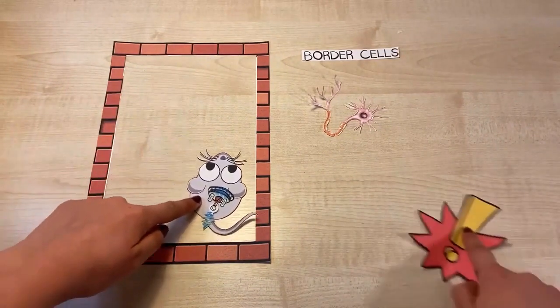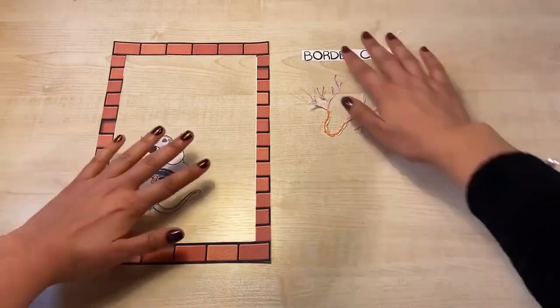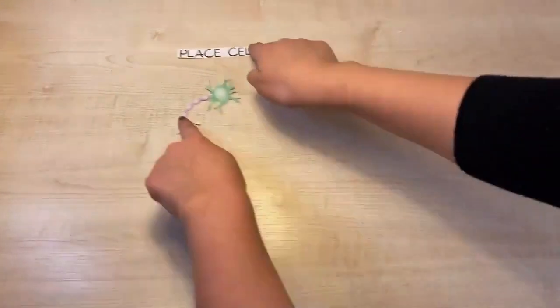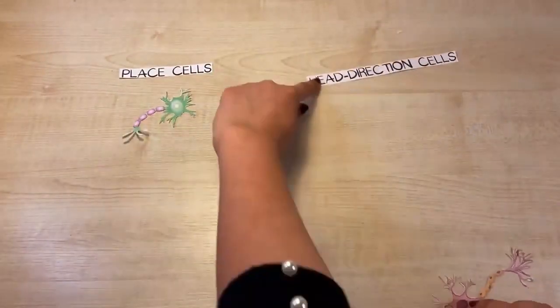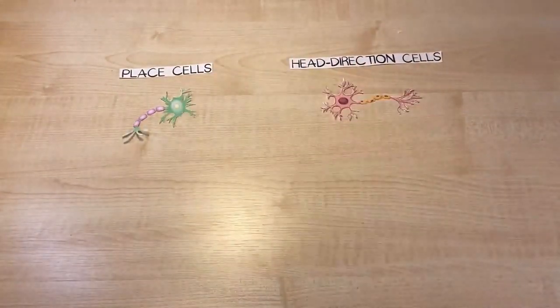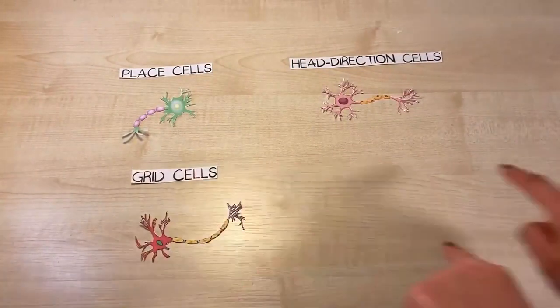These neurons work together, communicate with each other, and create patterns of activity that are repeated later so the brain can learn where you have been and relate memories to specific places.